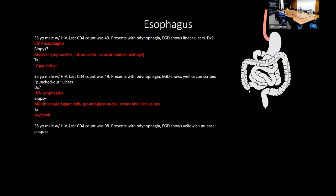A patient with CD4 of 98 and EGD showing yellow mucosal plaques — that's Candida esophagitis. Treatment is antifungals, specifically fluconazole (azoles) for esophagitis. Nystatin rinse is used for oral candidiasis only; for esophagitis, you use systemic fluconazole.